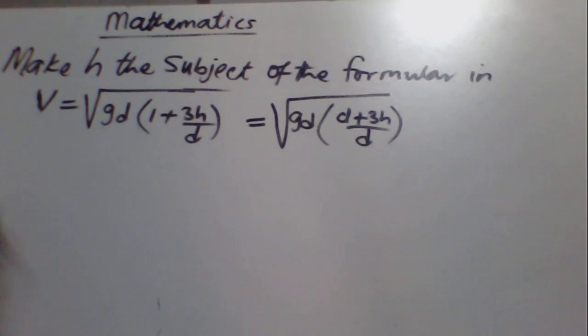We have the square root of gd in bracket d plus 3h divided by d. If you are multiplying every term in the bracket, you have the square root of gd squared plus 3gdh divided by d. Once you arrive at this point, you can replace these terms with that expression.